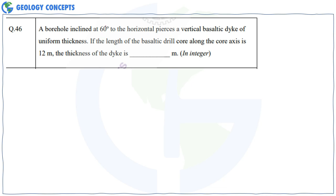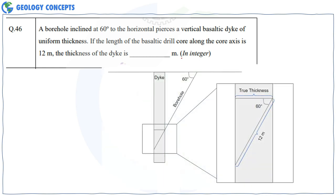Question 46: A borehole inclined at 60° to the horizontal pierces a vertical basaltic dike of uniform thickness. If the length of the basaltic drill core along the core axis is 12 meters, the true thickness of the dike is calculated geometrically. The true thickness works out to 6 meters.